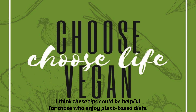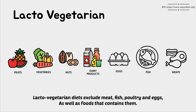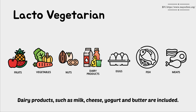First of all, I would like to show you the types of vegetarian diets. Lacto-vegetarian diets exclude meat, fish, poultry, and eggs, as well as foods that contain them. Dairy foods such as milk, cheese, yogurt, and butter are included.